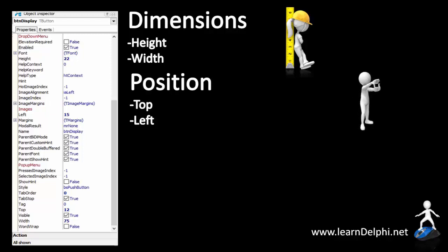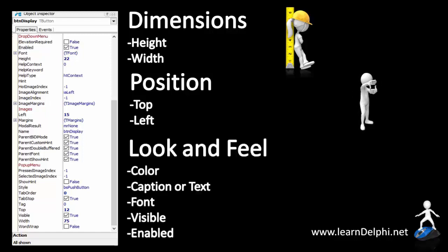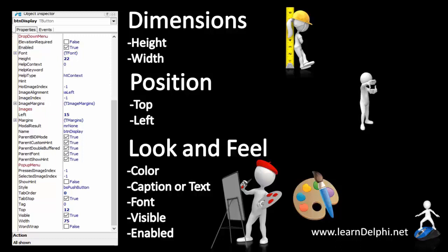We also have properties that can determine the look and feel of a graphical user interface. That can be properties like color, caption, text, font, visible and enabled.